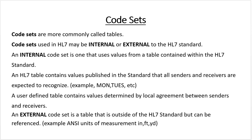Code sets are more commonly called tables. Code sets used in HL7 may be internal or external to the HL7 standard. An internal code set is one that uses values from a table contained within the HL7 standard. An HL7 table contains values published in the standard that all senders and receivers are expected to recognize. For example, Mon, Tue, etc. — abbreviations for days of the week using three or four-letter codes — that would be considered an internal table.